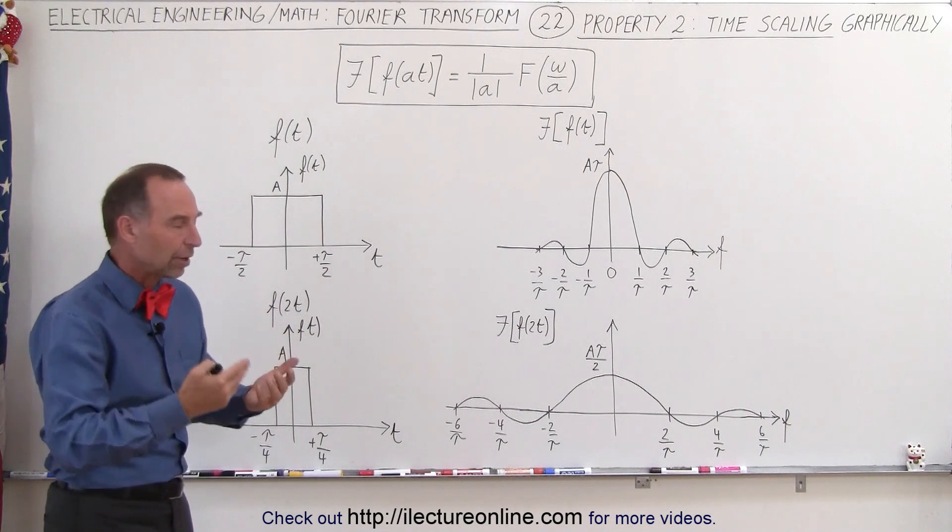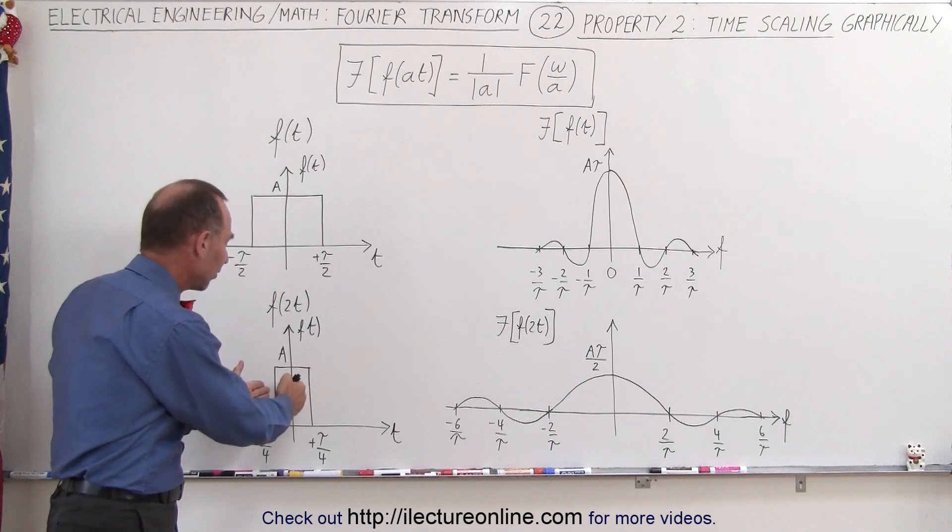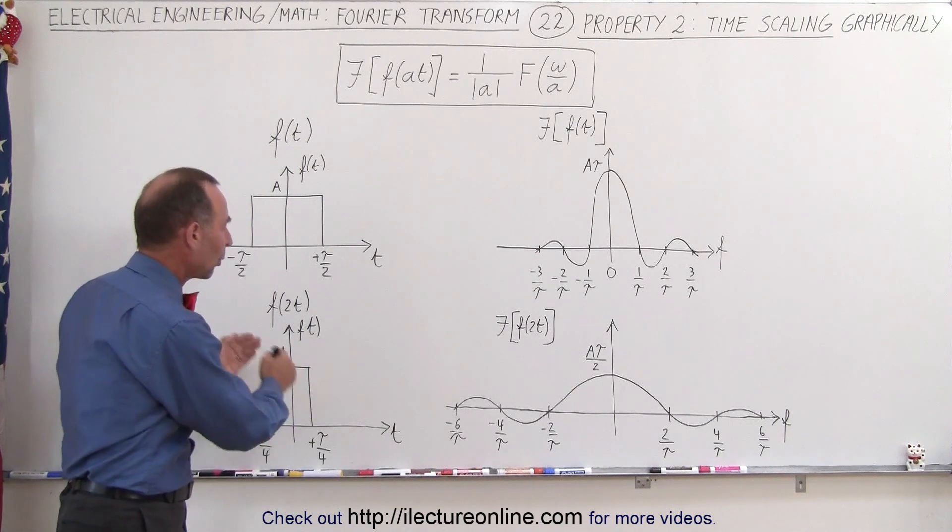And so if this was a signal processing event, then less signal strength here because it goes quicker means you'll have less amplitude in the frequency domain.